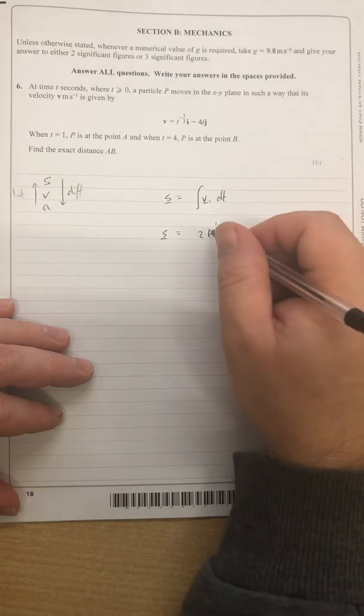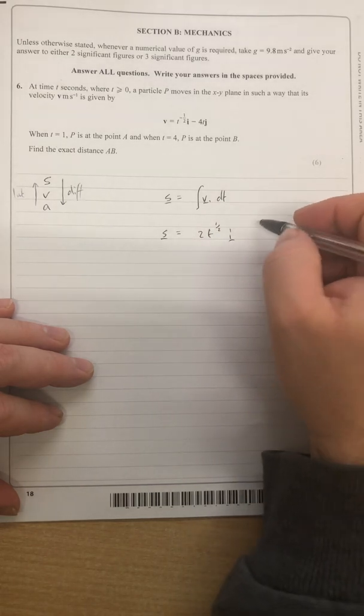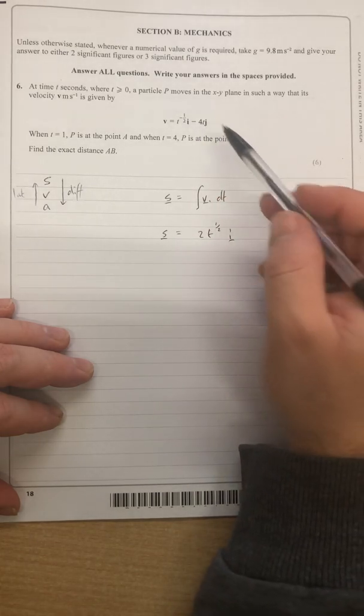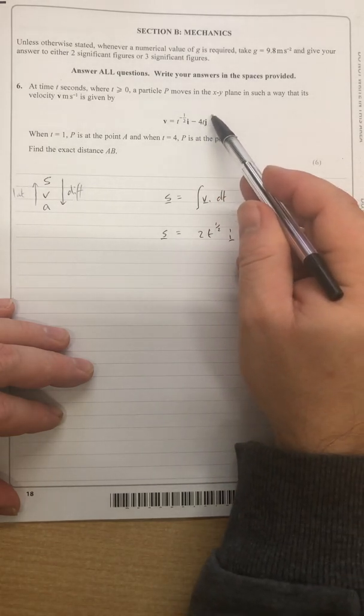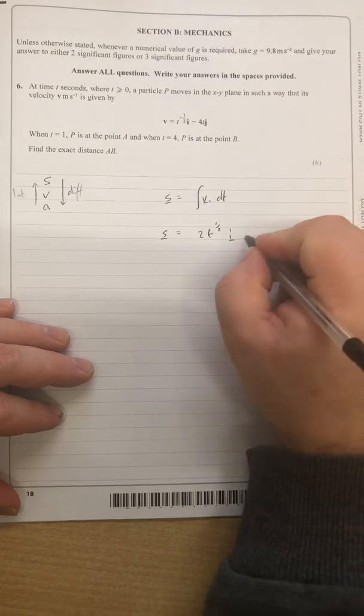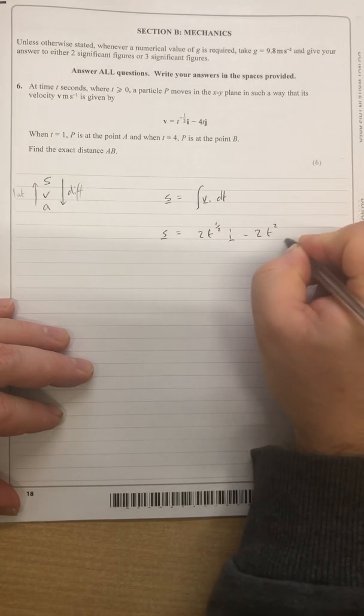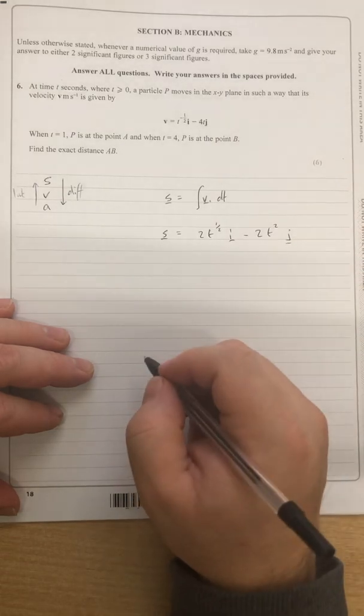And t isn't, if you recall t is always scalar. The other term then, I've got minus four t. So again the power goes up to two and I divide by the new power, so I'd have minus four over two is just two t squared, and again I've got j notation at the end there.